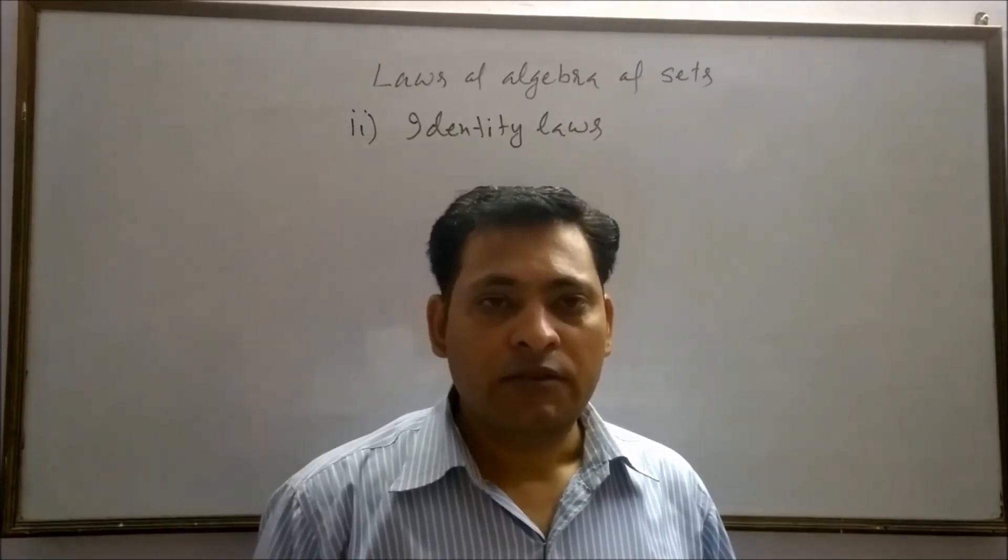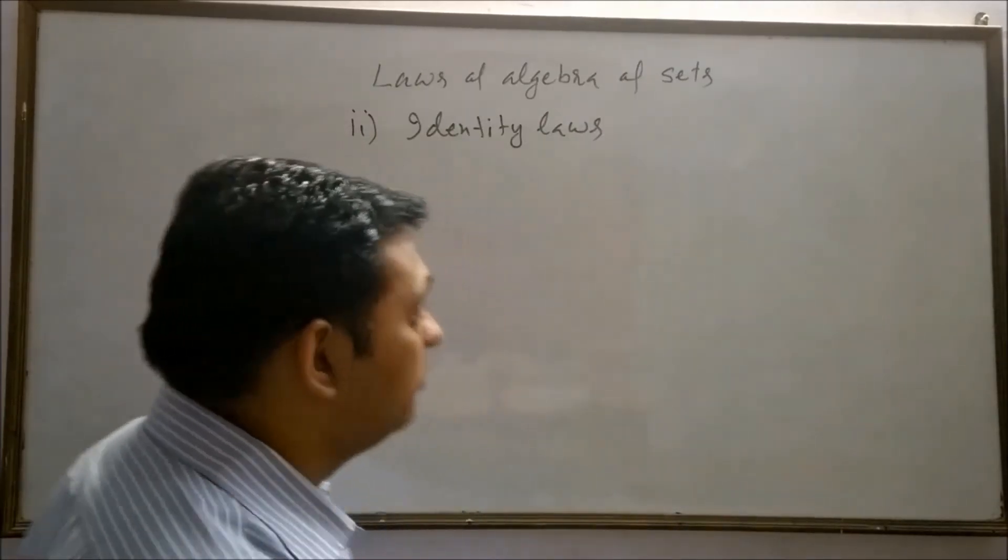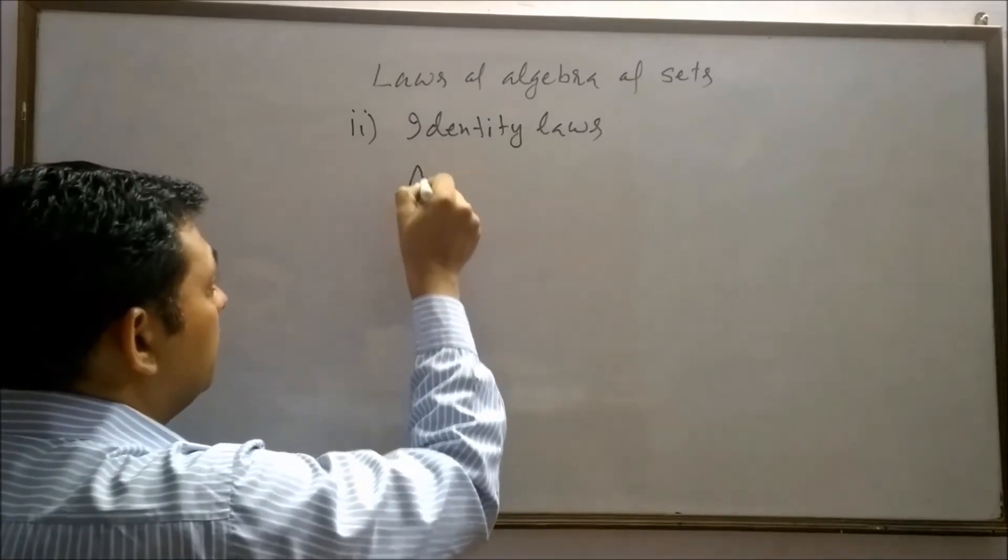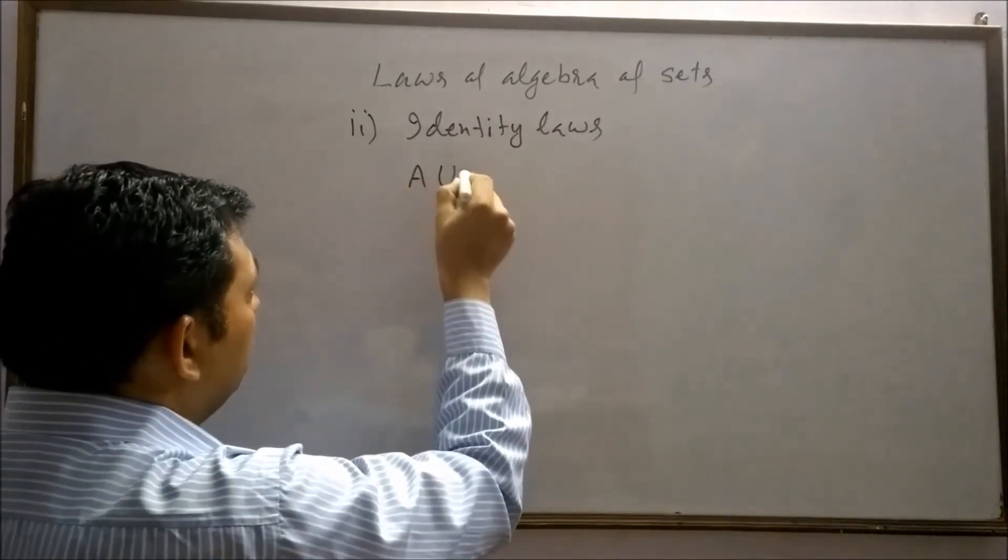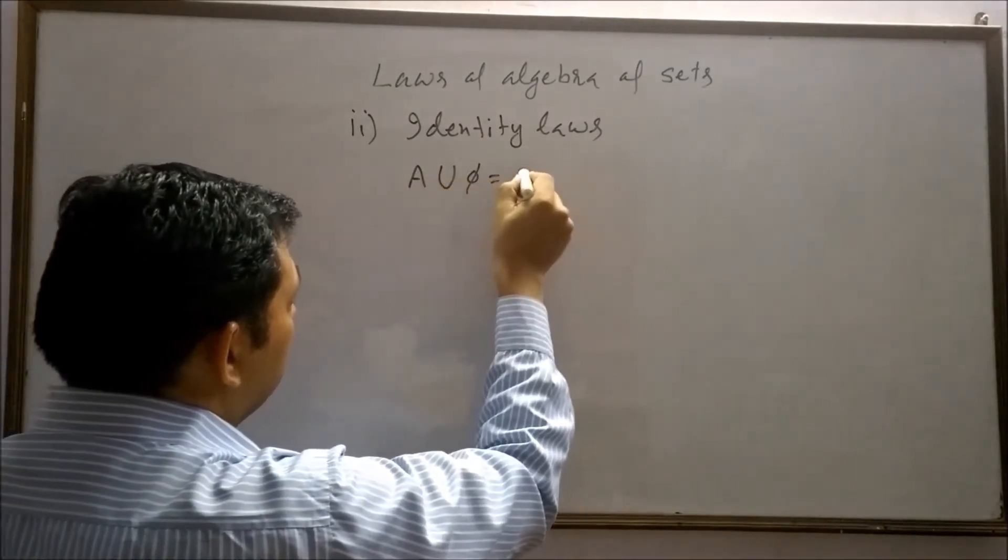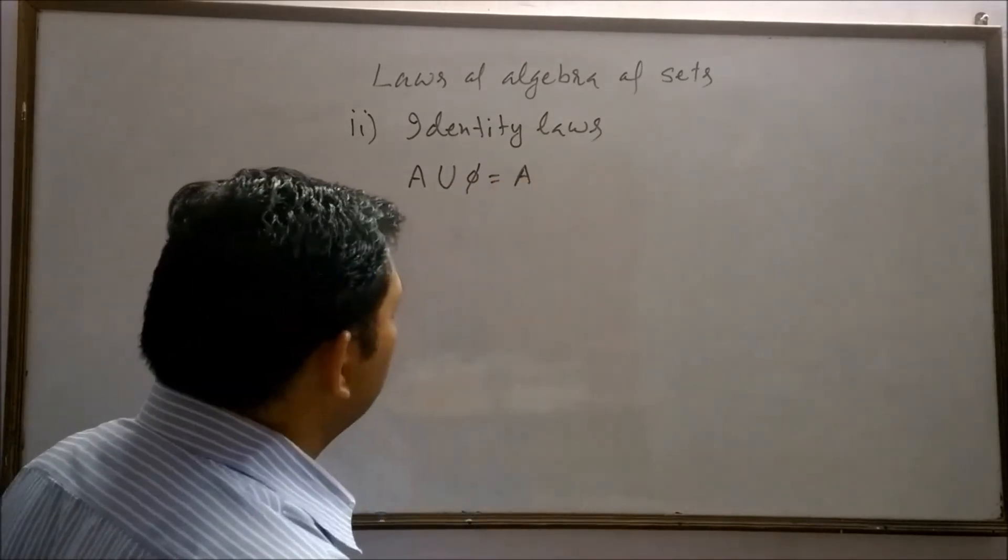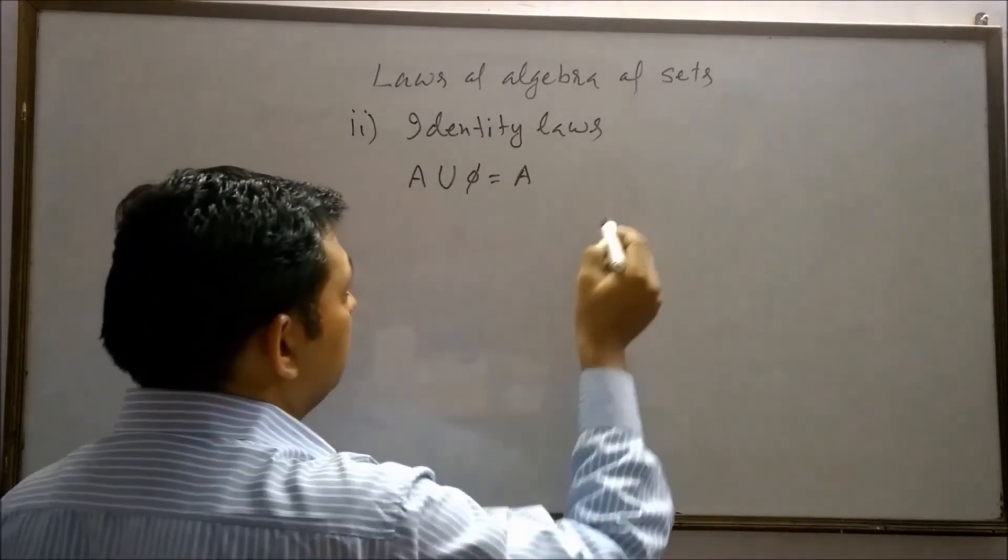Phi is identity for union. It means A union phi always gives A. For example,